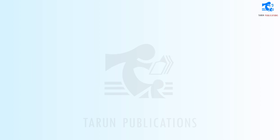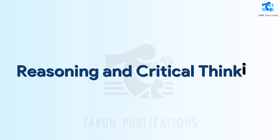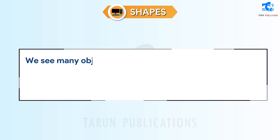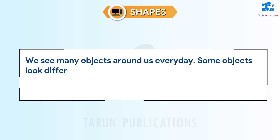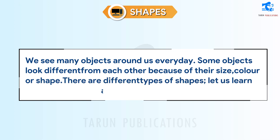Chapter 8: Reasoning and Critical Thinking. Shapes. We see many objects around us every day. Some objects look different from each other because of their size, color, or shape. There are different types of shapes. Let us learn about some of them.